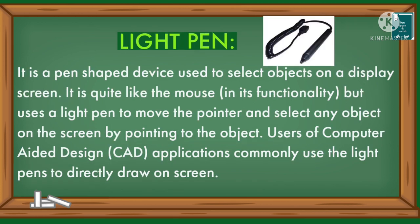Light pen is a pen-shaped device used to select objects on a display screen. It is quite like the mouse but uses a light pen to move the pointer and select any object on the screen by pointing to the object. Users of computer-aided design applications commonly use the light pen to directly draw on the screen.